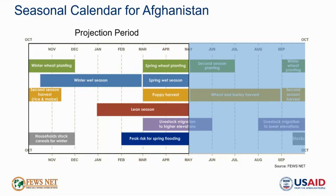Turning to our projection period through May 2023, the 2022-2023 precipitation season and main growing period will continue throughout. Though January typically marks the start of the lean season, we expect it will likely start early for many rural households this year given consecutive seasons of poor crop production, high prices, and below average income earning. In the spring, availability of seasonal food and income sources will begin to increase again, including income from the spring planting season and from poppy harvesting.